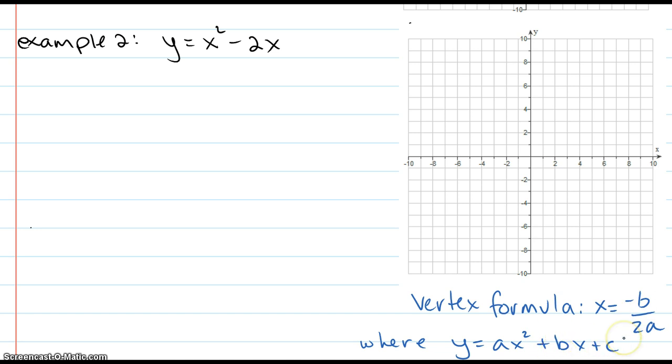The c, the constant, is not used in the vertex formula. So in this case, the a turns out to be 1. The b is the coefficient from the x, so that's negative 2. The c is 0, but we don't need the c. So if I use my formula, negative b over 2a, we get negative negative 2 over 2 times 1. So that's 2 over 2, which is 1.